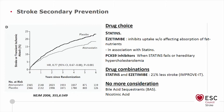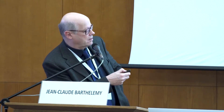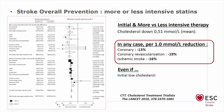You can add ezetimibe and eventually PCSK9 inhibitors. Here you have a hazard ratio which is very interesting after six years of intervention. The overall protection has been checked in the CTT — Cholesterol Treatment Trialists — and in any case, per 1 mmol/L reduction of LDL cholesterol, you get a decrease in coronary events, coronary revascularization, and interestingly in ischemic stroke as well.